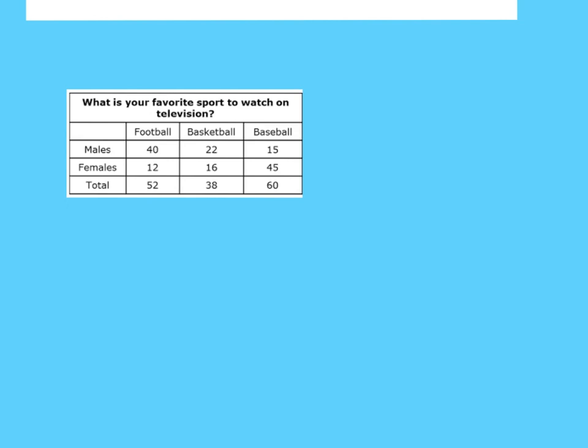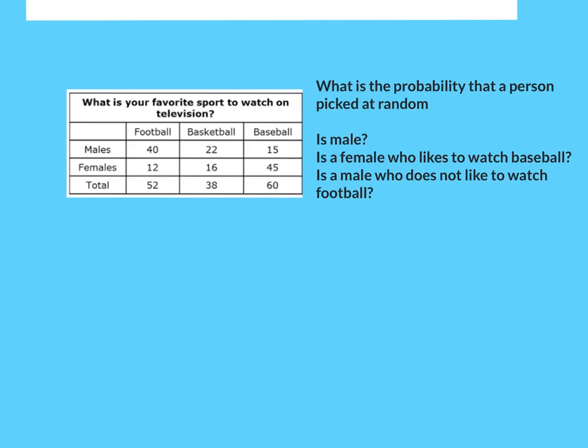Let's say we were asked to find the probability that someone picked at random is male. We've got all of these people, so we're going to have to find the total number of males first. Well that's how many males we have, but the probability they're male is the males out of the total. That'll be the probability that we'll pick a male.